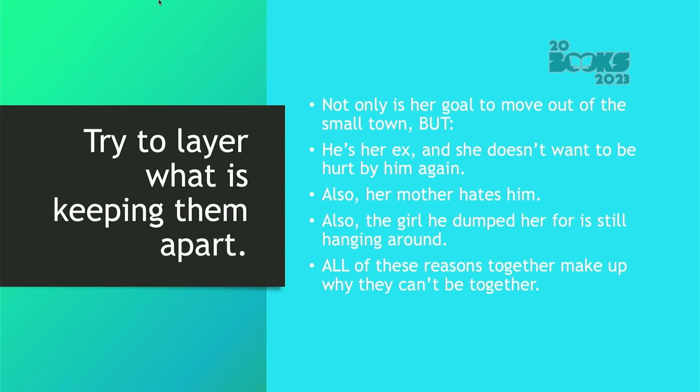What I try to do is layer what keeps my characters apart. So not only is her goal to move out of the small town, but he's her ex and she doesn't want to be hurt by him again. Also, her mother hates him. Also, the girl he dumped her for is still hanging around. So all of these reasons together make up why they cannot be together.